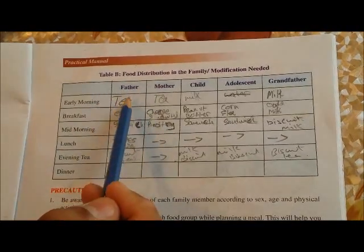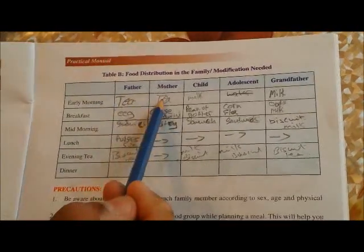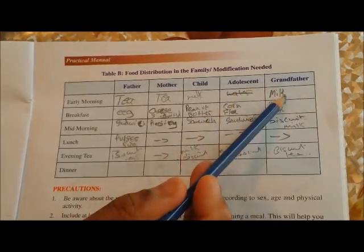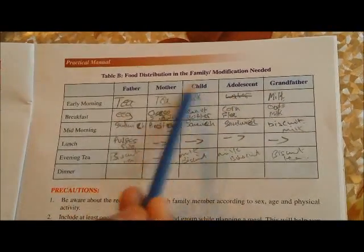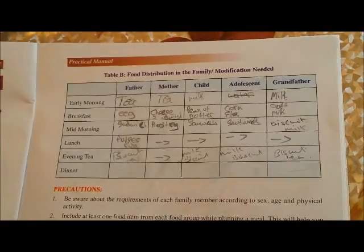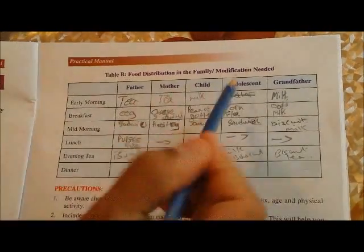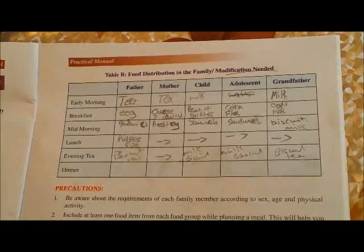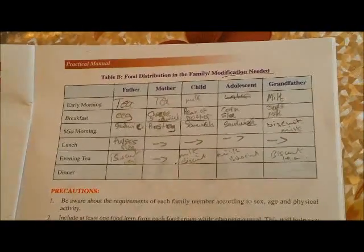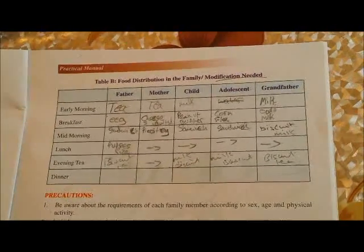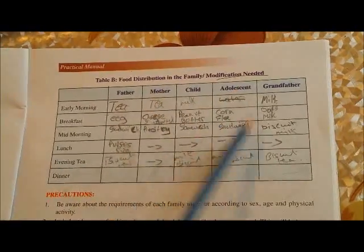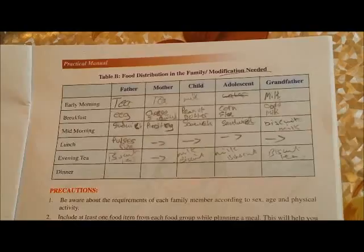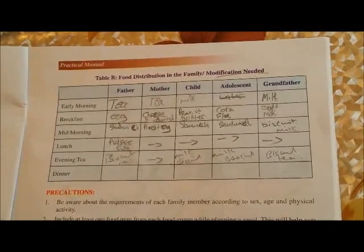For example, one of our students has done: in the early morning, the father needs tea, mother needs tea, the child needs milk, an adolescent usually doesn't take anything, and a grandfather needs milk. You can fill in the table depending on what your family members do, and if any modifications are needed — like increasing the amount of food or any changes — so that you can increase the nutritional values, you can add to it. These are the two tables that you will be asked to fill during your examination.